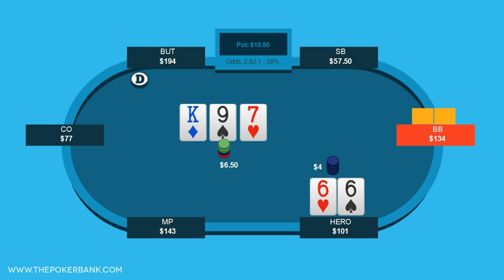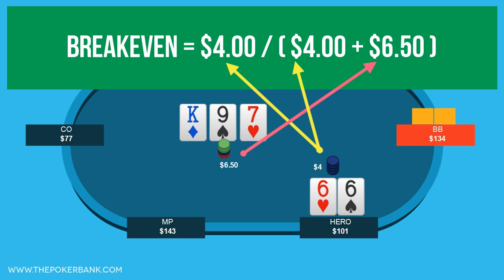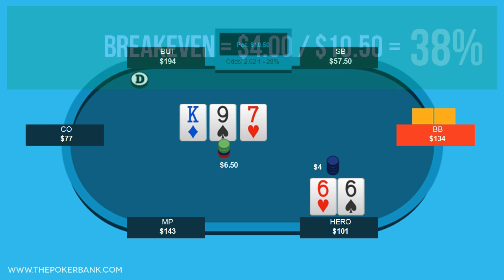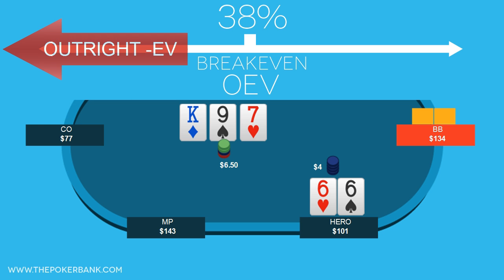If we pull out our breakeven formula, we only need to fill in 2 numbers. The risk is our bet size of $4, since that's what we're risking in this spot, and the reward is the pot, or $6.50. So $4 divided by $10.50 equals 38%. This means if villain folds 38% of the time, then this bet is breakeven. If he folds less, this bet is outright negative EV, and if he folds more than 38% of the time, this bet is outright plus EV.